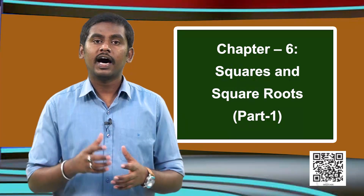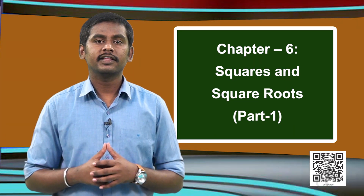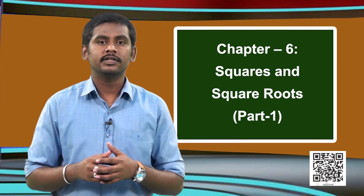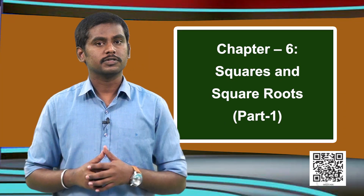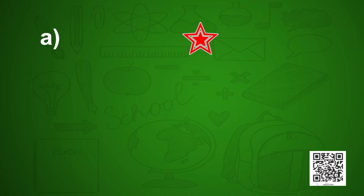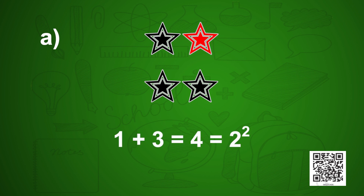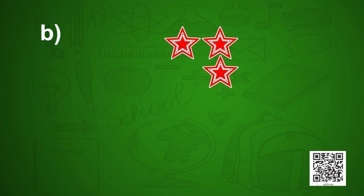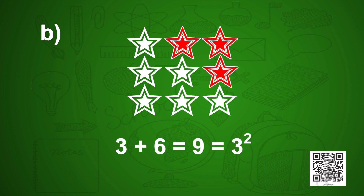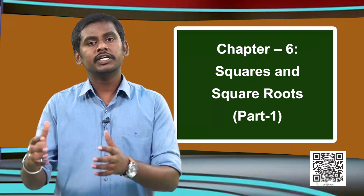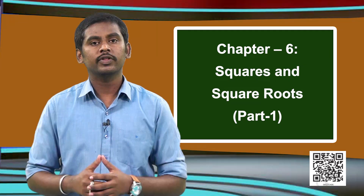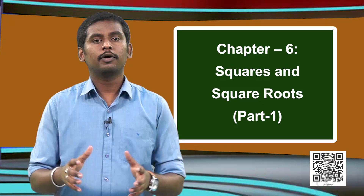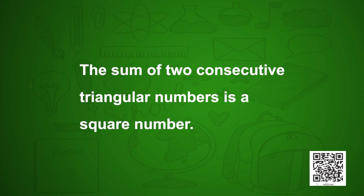How are triangular numbers related to square numbers? Whenever you take two consecutive triangular numbers and add them, observe what we get. The first two triangular numbers are 1 and 3: 1 + 3 = 4, which is 2 squared — a square number. Next: 3 + 6 = 9, which is 3 squared. So whenever you add two consecutive triangular numbers, you always get a square number.